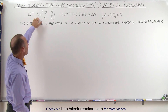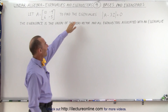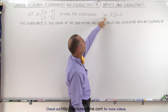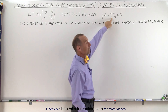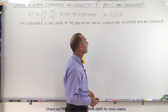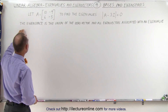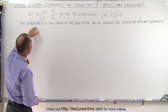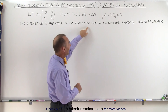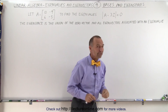Start with a 2x2 matrix A, as defined as such. We know that to find the eigenvalues we're going to take the determinant of the matrix A minus the unknown eigenvalues times the identity matrix, and we set that equal to zero. Keep in mind that the eigenspace is what we call the union of the zero vector and all the eigenvectors associated with an eigenvalue.